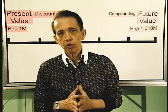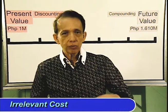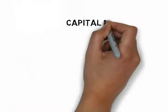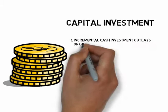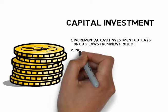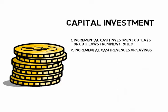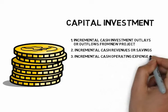So, if I were renting office space and the new project would use that same office space, then the cost of the rental would be irrelevant. The capital investment analyst must figure out: 1) the incremental cash investment outlays or outflows attributable to the new project; 2) the incremental cash revenues or savings from the project; 3) the incremental cash operating expenses for the project; and 4) the terminal cash values at the end of the project's life.